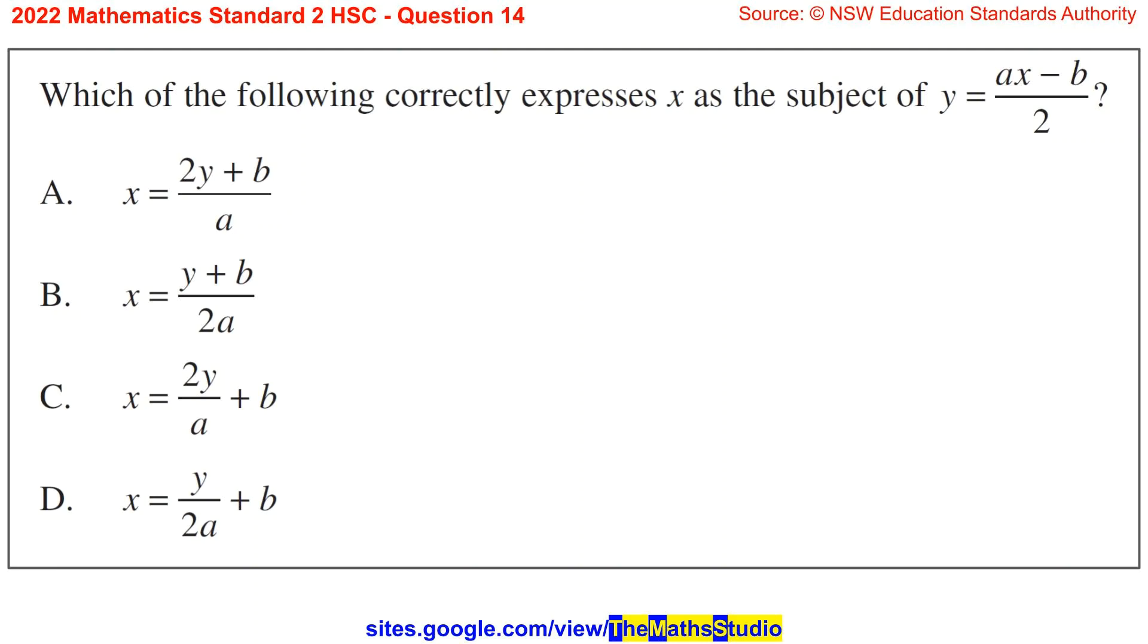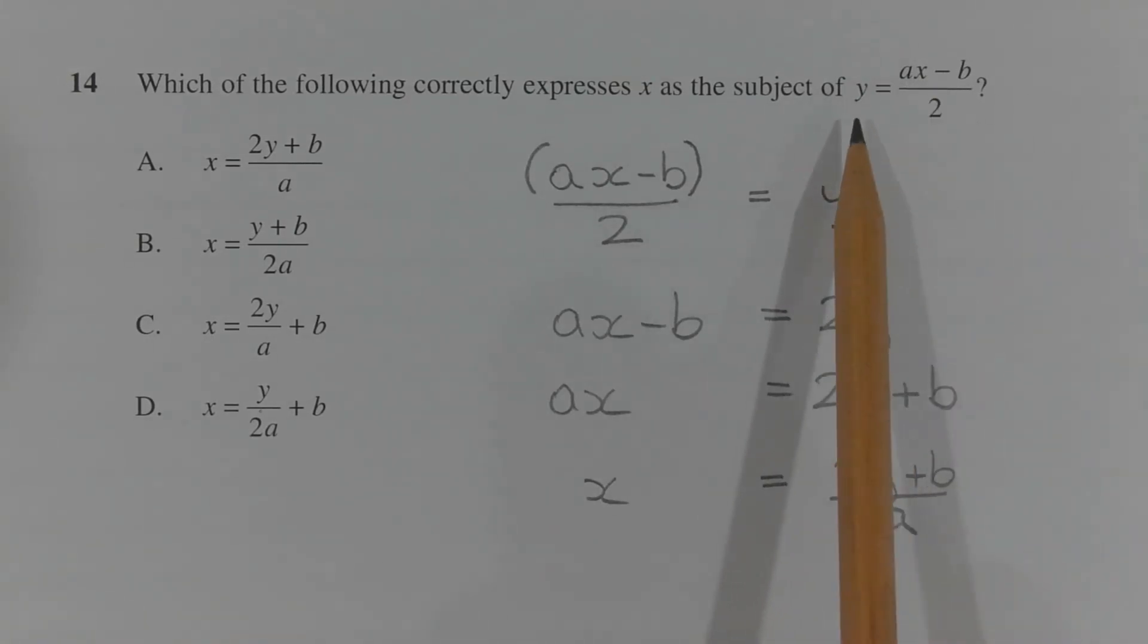Question 14. Which of the following correctly expresses x as the subject of y equals ax minus b over 2? We want to make x the subject of the formula y equals ax minus b over 2.